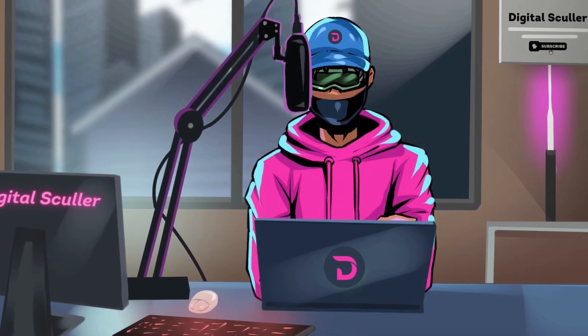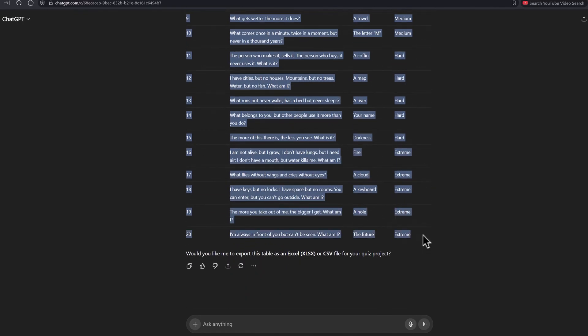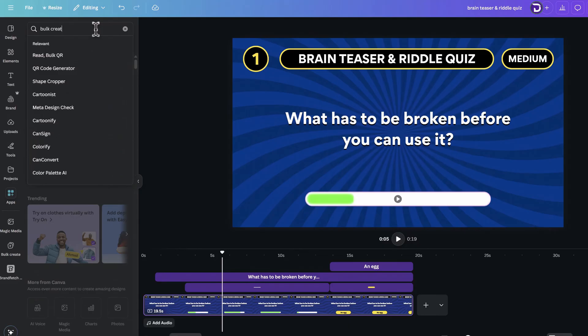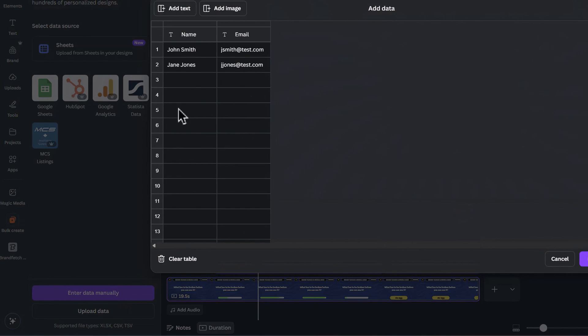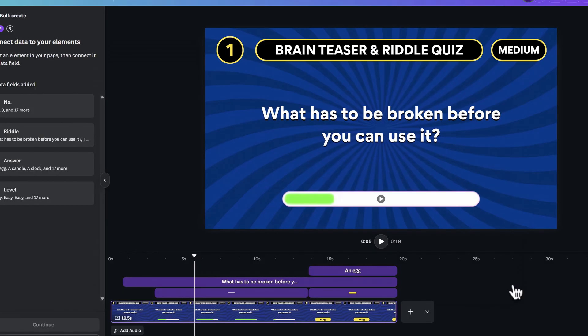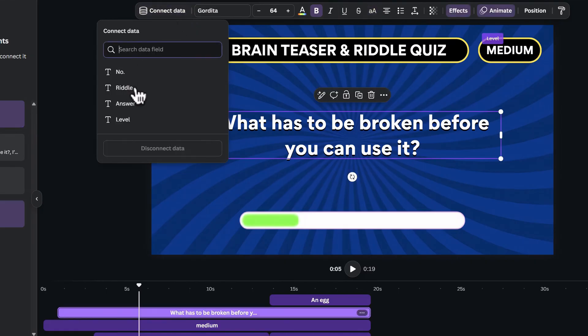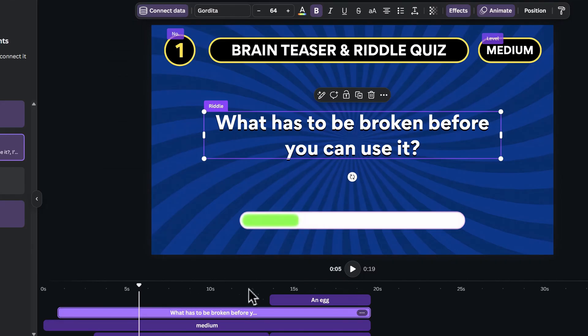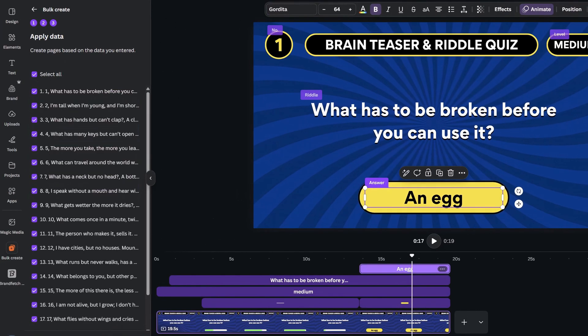The next step is bulk create. So go back to ChatGPT, and copy the table from the header to the last line. Go back to Canva, and look for bulk create in the apps library. Click on the first result, and on the pop-up window, click to enter your data manually. Clear the table, and paste the data in the first block. Then click on Done. Click on the figure, connect data, and choose number. Click on medium, connect data, and choose level. Click on the middle text, connect data, and choose riddle. Move the playhead to the answer position. Click on the answer text, connect data, and choose answer. Click on continue, and generate the 20 designs. It will generate them in seconds, and you can click on the pop-up button to look at them.